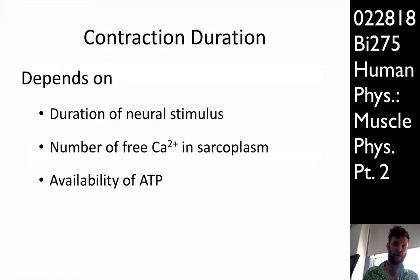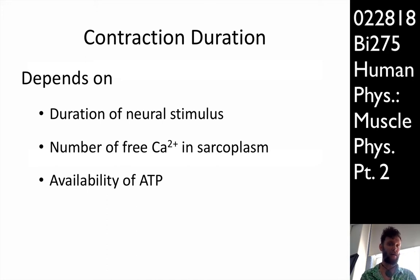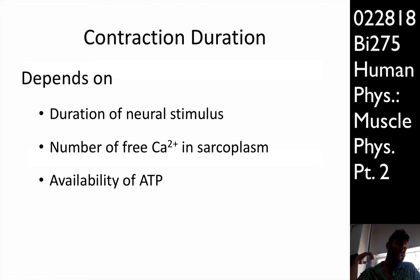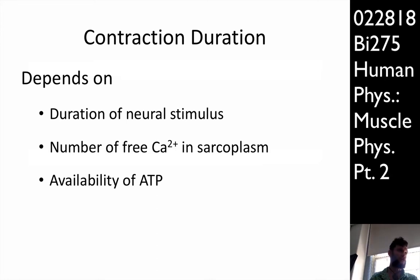The contraction duration depends on the duration of the neural stimulus — how quickly the synapse is able to reset itself, meaning how rapidly the acetylcholine is able to diffuse off the acetylcholine receptor and acetylcholinesterase recycle it. Synapses have different inherent time constants in terms of their function. That's one factor affecting contraction duration. The next is how much calcium is available in the sarcoplasm — the cytosol of the muscle cell. And then the availability of ATP.